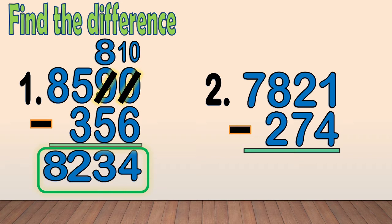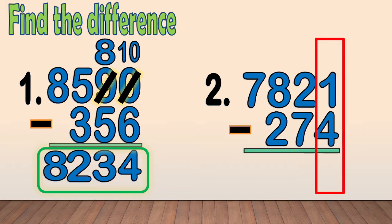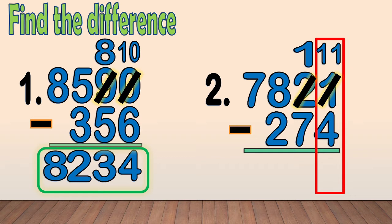Number 2: 7,821 minus 274. First, we subtract the ones: 1 minus 4. We cannot subtract 4 from 1, so we regroup one 10 from 2. We have 11 ones. We cross out the 1 and write 11 as new ones. Now we only have one 10 — we cross out the 2 and write 1 at the top. We subtract the ones: 11 minus 4 equals 7.